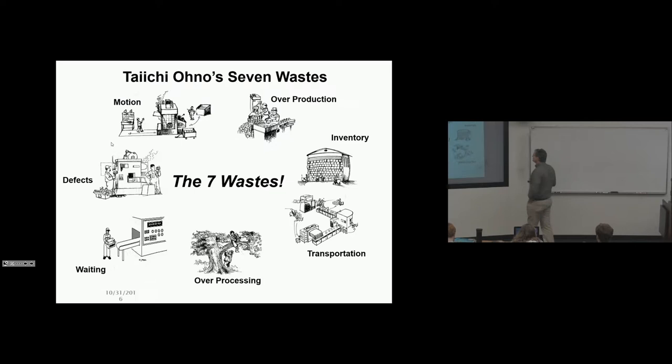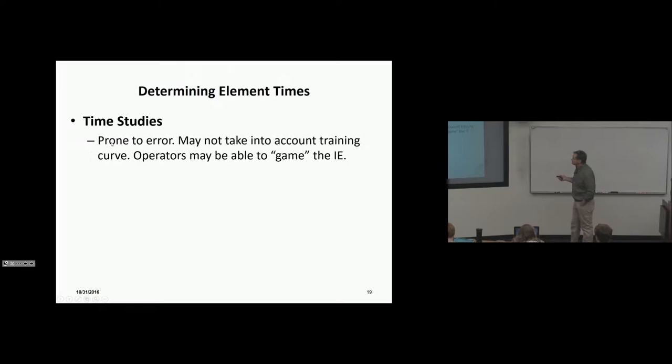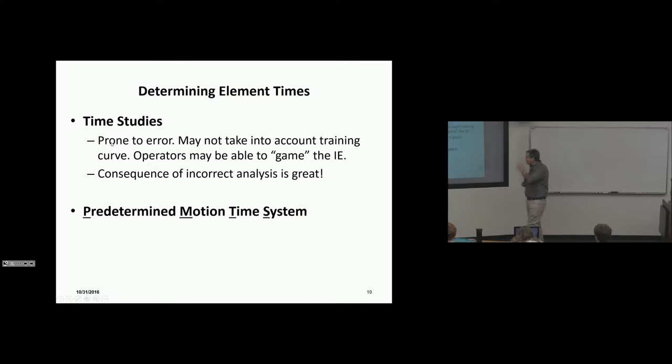Seven ways, just a reminder. So determine the elements of time. I say time studies, this is my belief. Time studies are prone to error. May not take into account training curve. Operators may be able to game the IE. So there's a lot of variation in my opinion with time standards using watch. And the consequence of incorrect analysis is so significant. If you make error when you're taking the time using the watch and you don't assess properly, it can be catastrophic, especially if the organization trusts you and you're wrong.